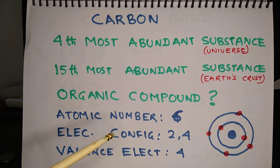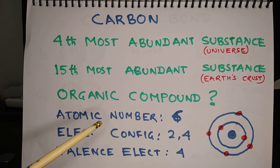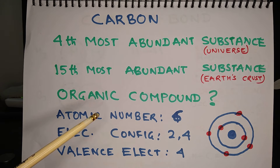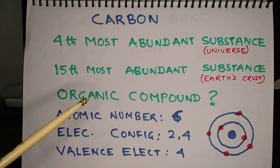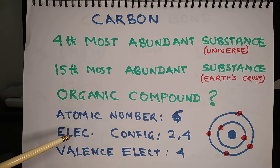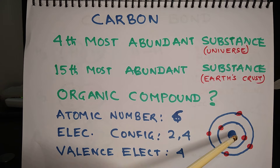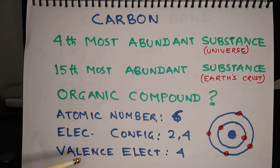Even today, when synthesis of many organic compounds has become possible, the convention is still holding on and we still call them organic compounds. The atomic number of carbon is six and its electronic configuration is 2 and 4, which means there are two electrons in the innermost shell and four electrons in the outermost shell. So valence electrons in carbon are four.